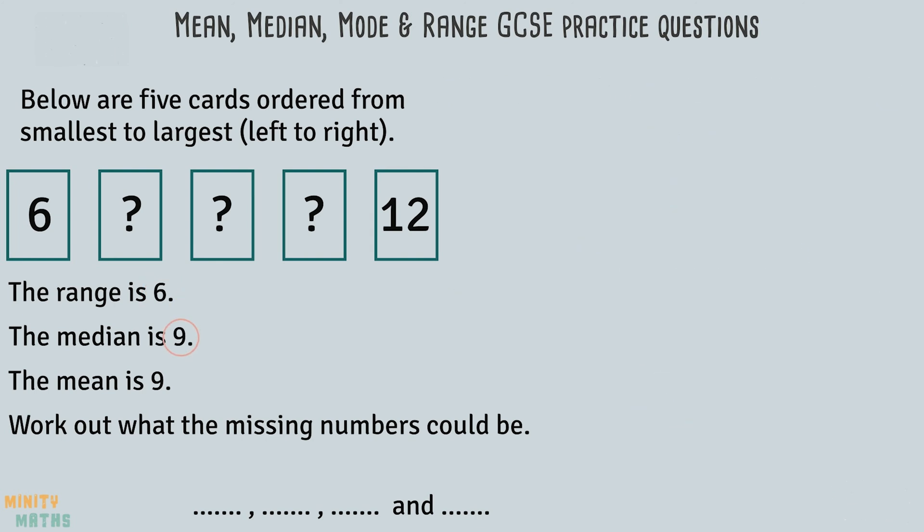Next we are given the median number of 9. The median is the middle value, and as we have 5 cards, the middle value is the third card. So we know this card is 9.